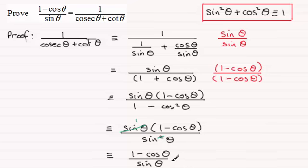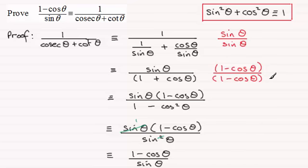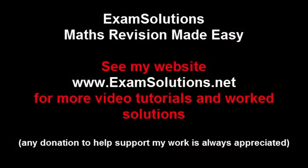Quite a nice question, showing off the idea of multiplying top and bottom of a fraction by the same value, and also another look at the difference of two squares — (1 plus cos theta)(1 minus cos theta) — which is quite common in these kinds of examples. Hope you were able to get that one; if not, I hope you've been able to see how to do it. Thank you.